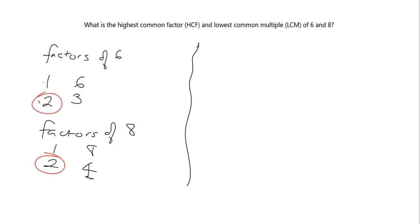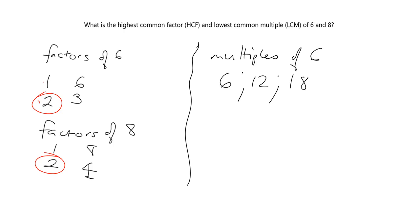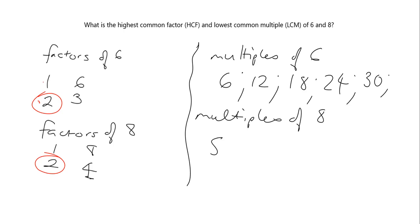For the lowest common multiple, we write out the multiples of each number. The multiples of six are: six, 12, 18, 24, 30, and we can carry on for quite a while. What about the multiples of eight? Eight, 16, 24. We have a multiple in common, and that's the smallest multiple in common. So the least common multiple of six and eight is 24. Nice and easy.